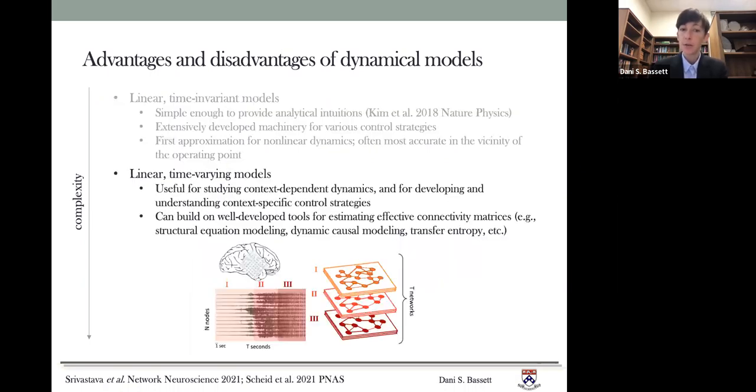But let's move then on to the linear time varying models. How are these useful? Well, these are useful for studying context dependent dynamics and for developing and understanding context specific control strategies. They can build on some well developed tools for estimating effective connectivity matrices. So, for example, structural equation modeling, dynamic causal modeling and transfer entropy. And they can take advantage of a lot of the machinery that has been developed for linear models, but just using it in sort of a piecewise linear manner.